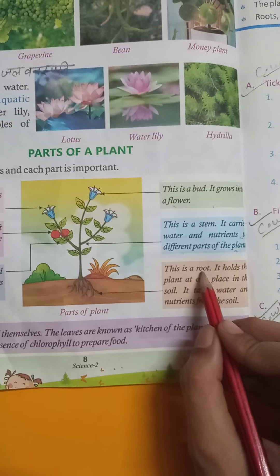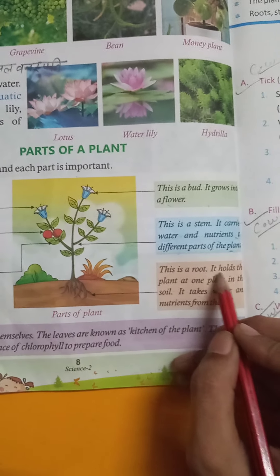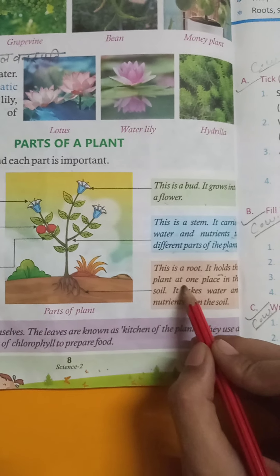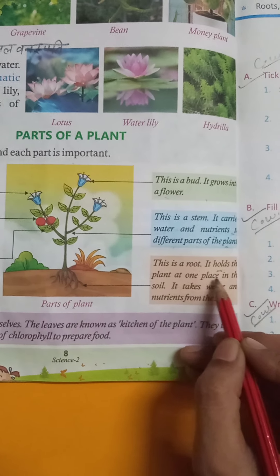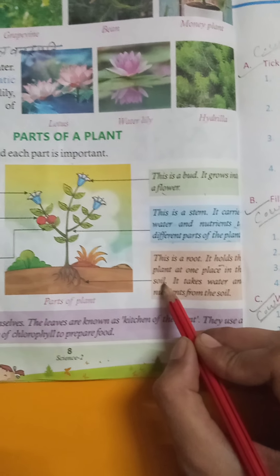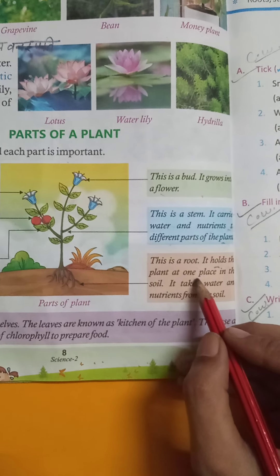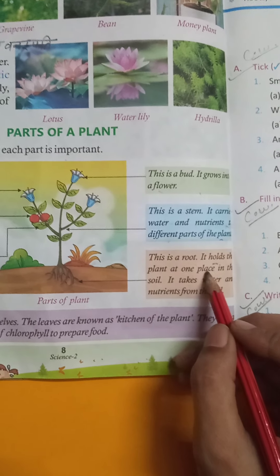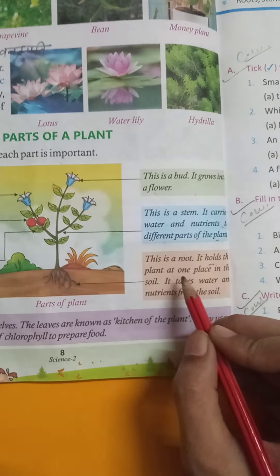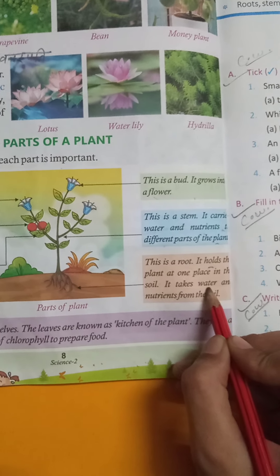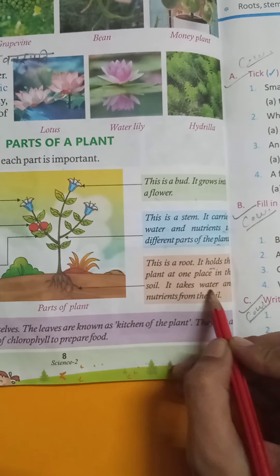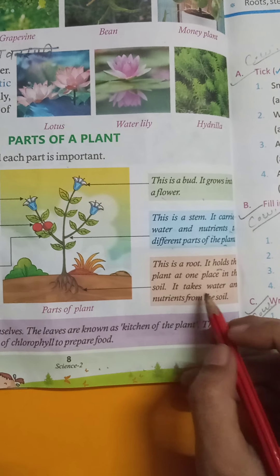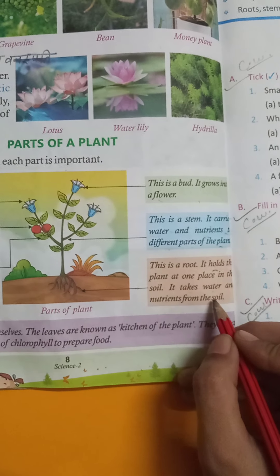This is a root — it holds the plant at one place in the soil. It takes water and nutrition from the soil.